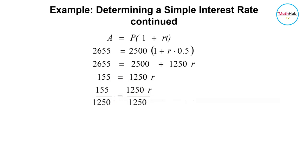So R is equal to 155 over 1,250. And that is equal to 0.124 or 12.4%. Just move the decimal point two places to the right or multiply this by 100. Therefore, you will pay a simple interest rate of 12.4%.